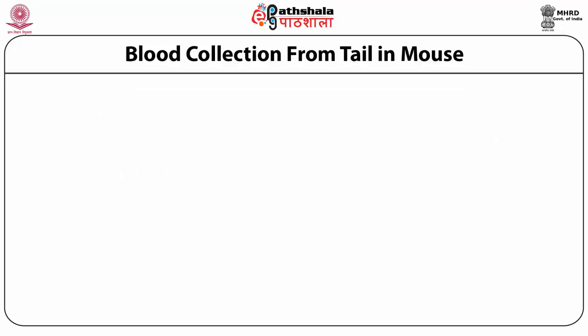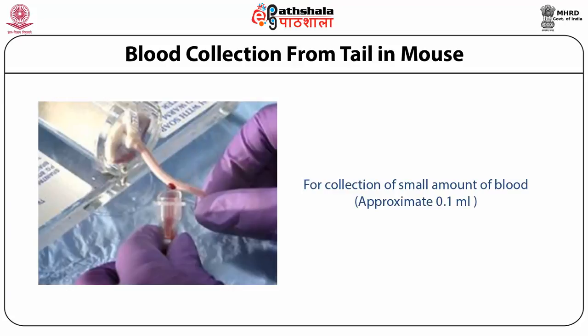Safe intravenous injection volume is 0.2 to 0.5 ml. Total blood volume is 1.2 to 2.4 ml based on body weight. Safe bleed volume is 0.1 to 0.2 ml — that is 100 to 200 microlitres in a 20-gram mouse — with a collection interval of 14 days.